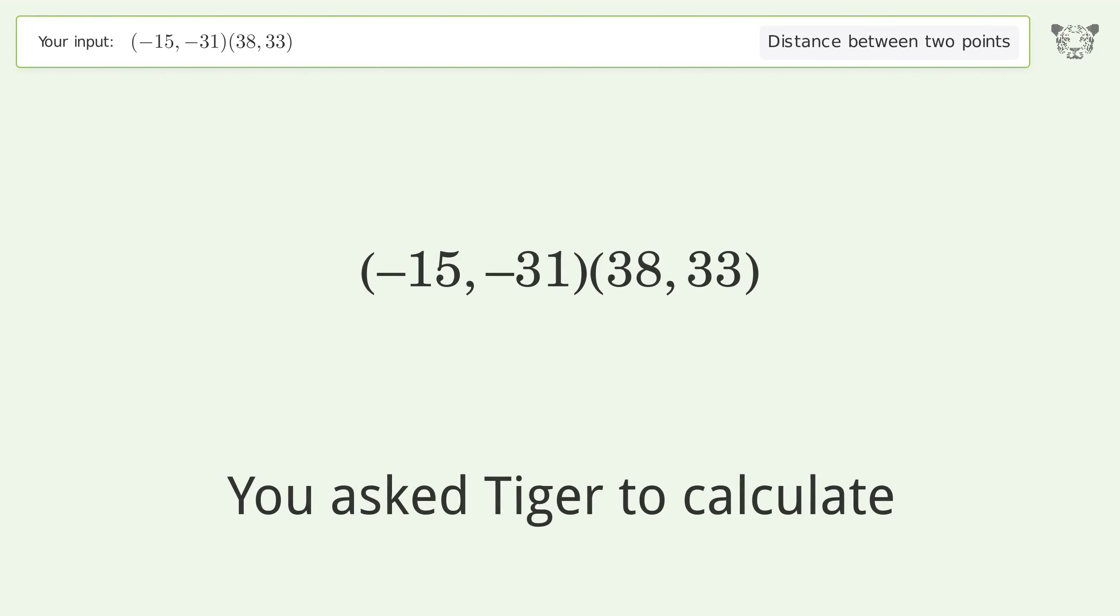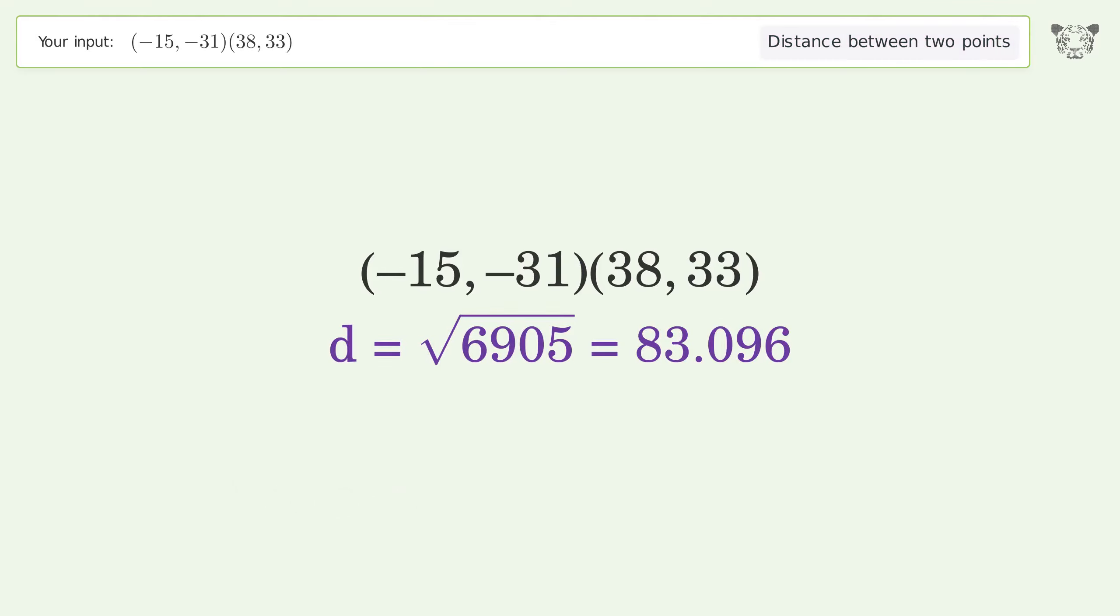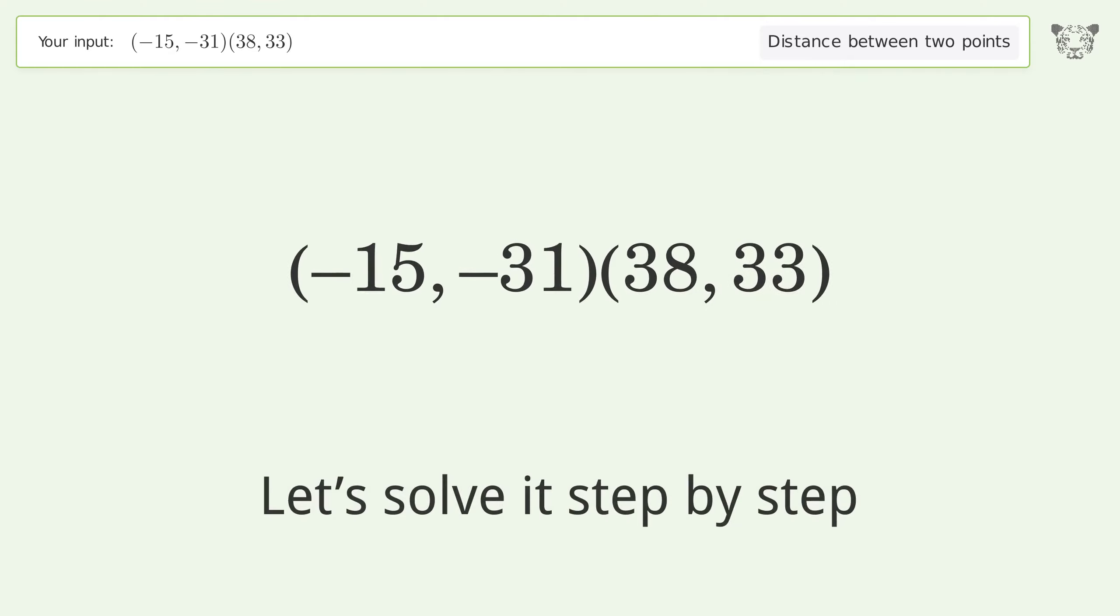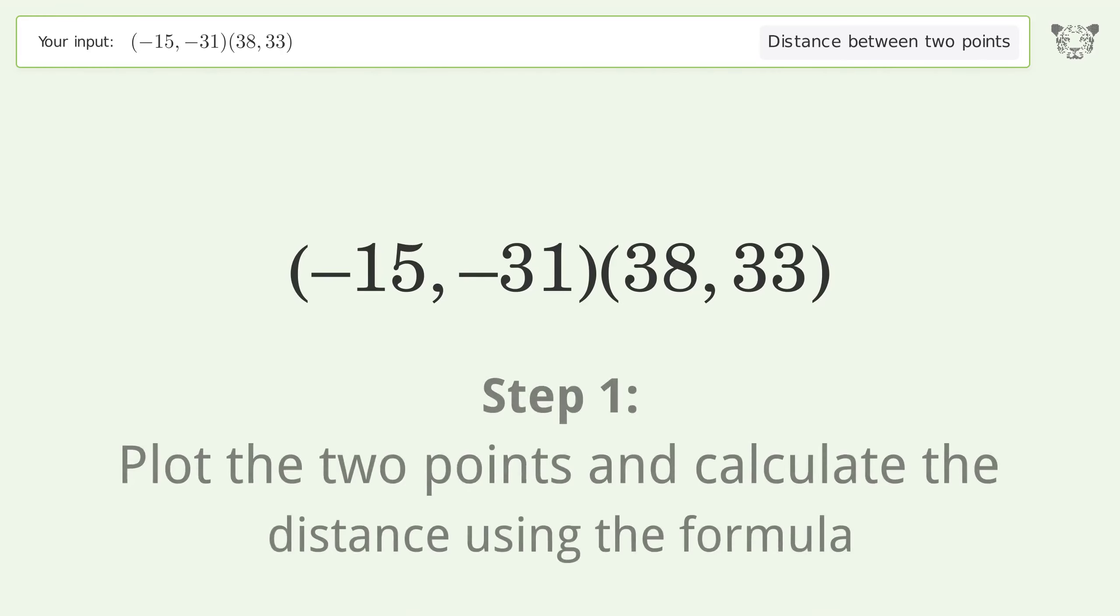You asked Tiger to calculate the distance between two points. The distance between the two points is the square root of 6905 or 83.096. Let's solve it step by step. Plot the two points and calculate the distance using the formula.